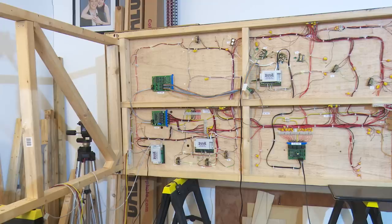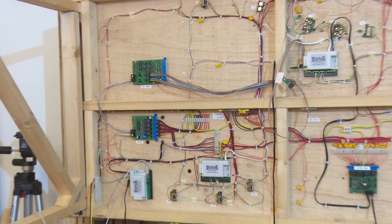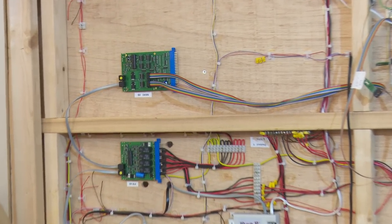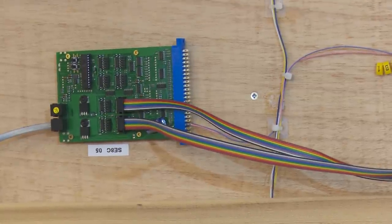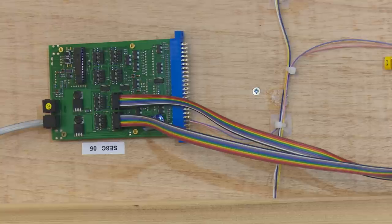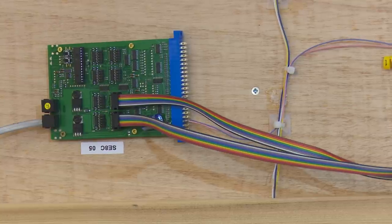To control signals Digitrax have made a component called the SE8C and it works on a ribbon cable as you can see them coming out one side and then the LocoNet feed comes in there on the left hand side.